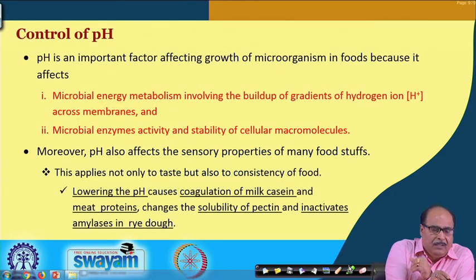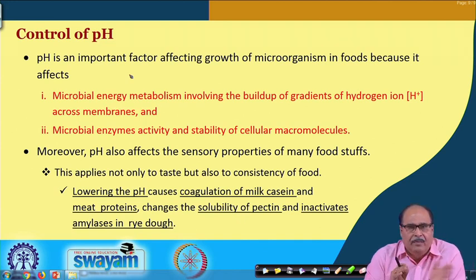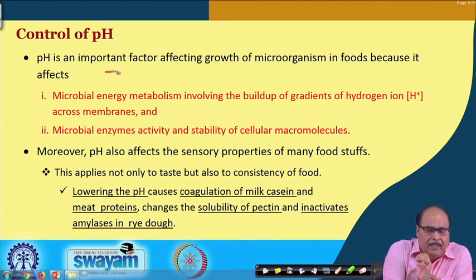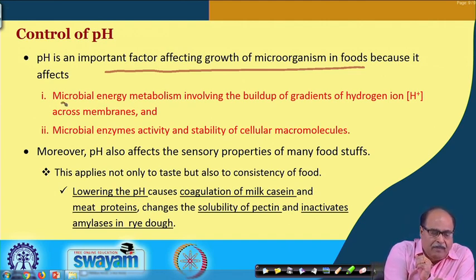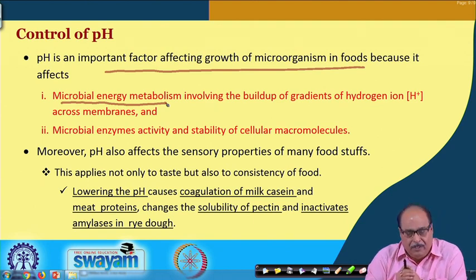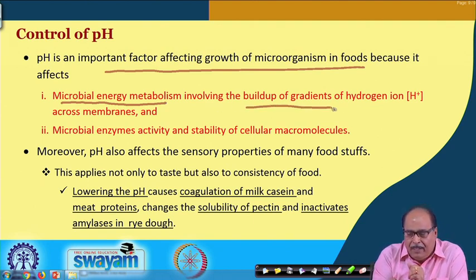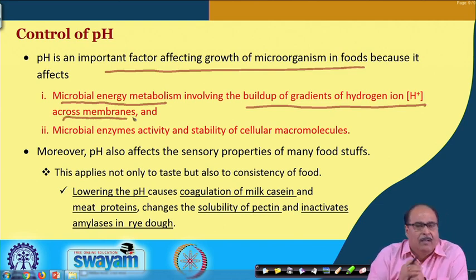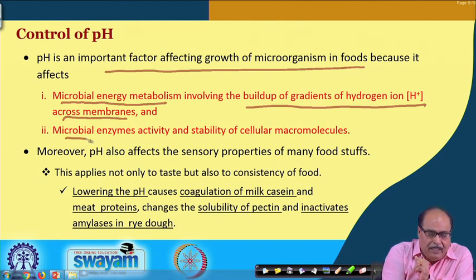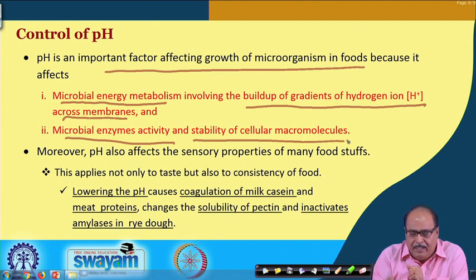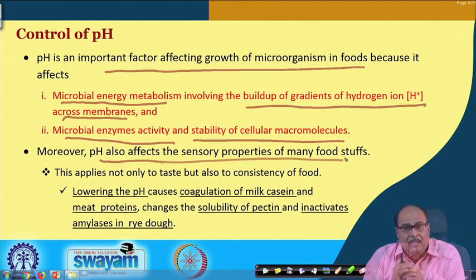pH is an important factor affecting the growth of microorganisms in food because it affects the microbial energy metabolism, involving the build-up of a gradient of hydrogen ions across the microbial cell membrane. It also affects microbial enzyme activity and stability of the cellular macromolecules. Additionally, pH affects the sensory properties of many foods.